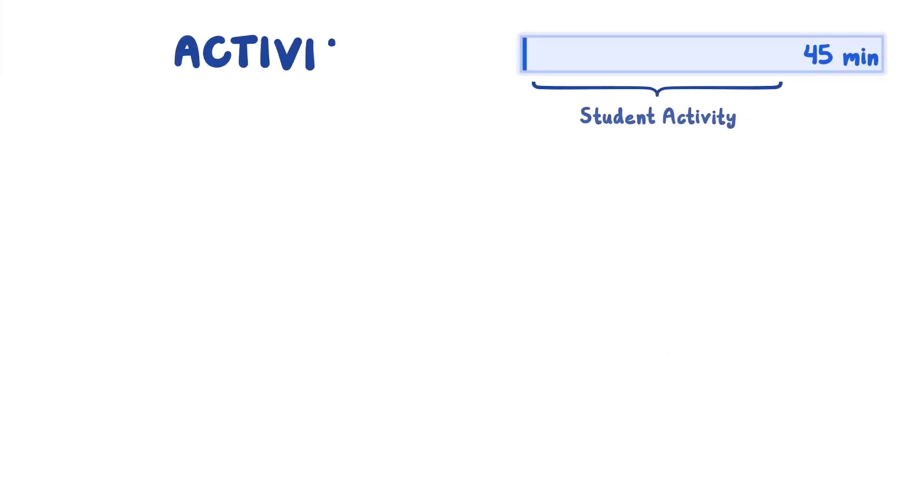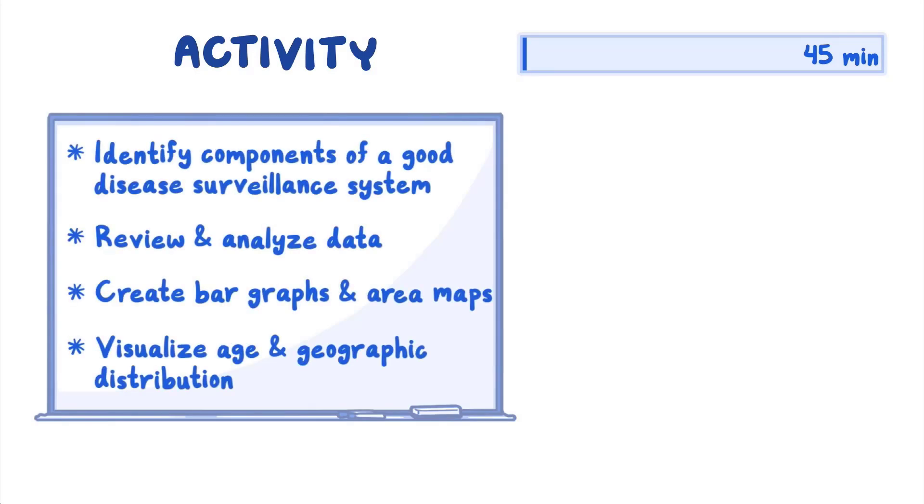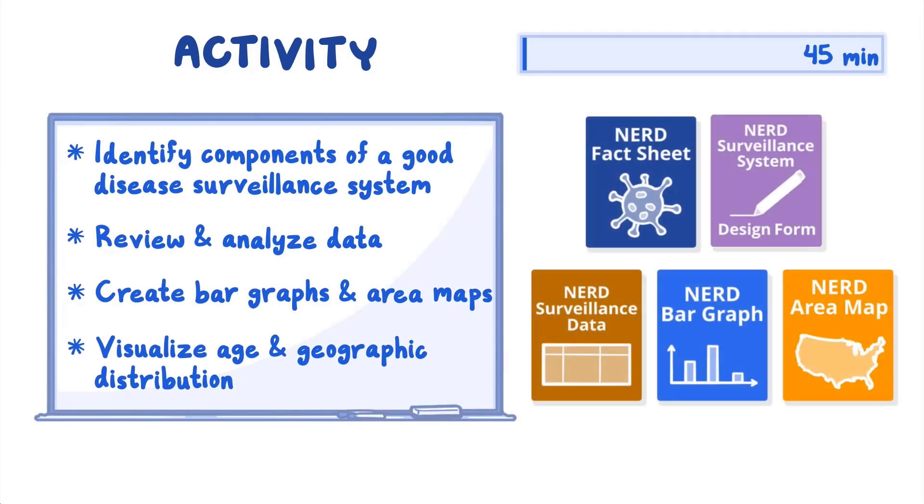In this 35-minute activity and 10-minute class discussion, students start by identifying components of a good disease surveillance system. They review and analyze data, then create bar graphs and area maps to visualize the age and geographic distribution of the disease.